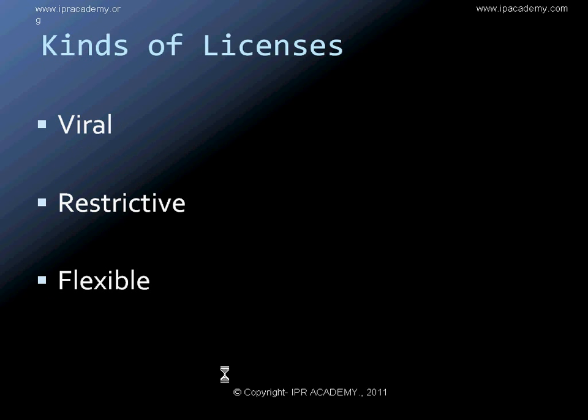Open source software licenses are broadly of three types. The first type is a viral license or viral group of licenses. The second group are restrictive licenses, and the third set are flexible licenses. Each one of these licenses gives you a certain amount of rights and flexibility with respect to using a software governed by these licenses. Let's have a look at an example of each kind and understand what they grant and what restrictions they impose.